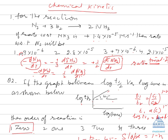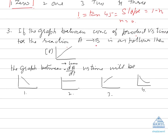If the graph between concentration of product versus time shows a straight line, then you need to predict the graph between rate of reaction versus time. In the case of a zero-order reaction, the rate does not depend upon time, so the concentration vs. time graph is always a straight line. This confirms it is a zero-order reaction, and the rate versus time graph will be parallel to the x-axis because the rate remains constant.